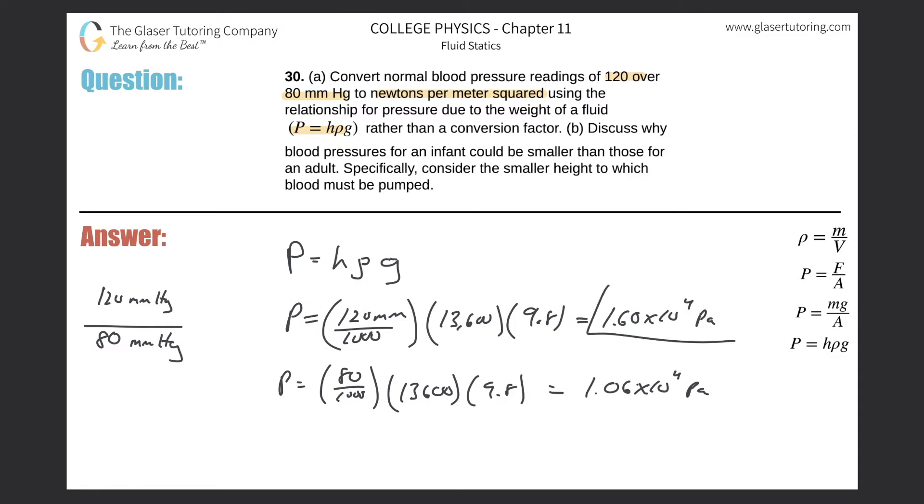So these would be the two readings, systolic, diastolic. Then part B, discuss why blood pressures for an infant could be smaller than those for an adult. Specifically consider the smaller height to which blood must be pumped.